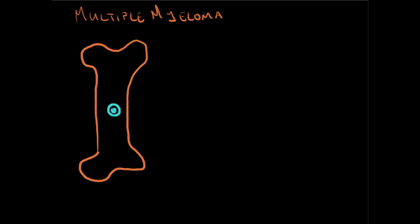Inside the marrow, which is a factory of blood, there are cells called stem cells. Stem cells are the parent cells from which a range of other cells are made. There are so-called white cells, red blood cells, and platelets — these are the main large categories. In summary, the white blood cells are there to fight infection, the red blood cells to carry oxygen, and the platelets to prevent bleeding.